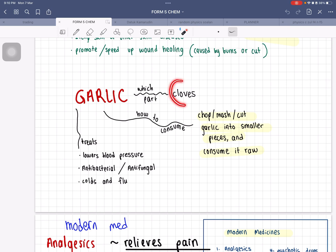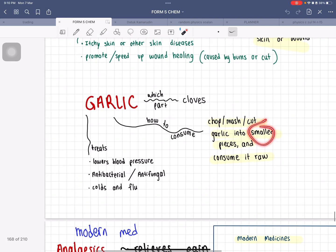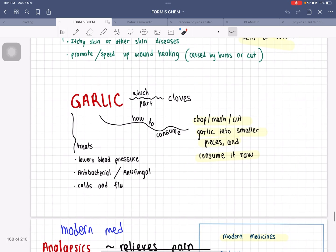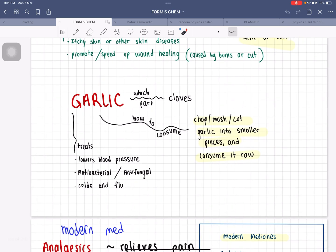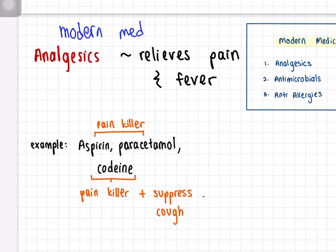The last traditional medicine is garlic, and the part used is the cloves. You chop, mash, or mince it into smaller pieces and consume it raw — one method is to mash it and mix it with honey. Garlic treats cold and flu, is antibacterial and antifungal, and also helps to lower blood pressure.